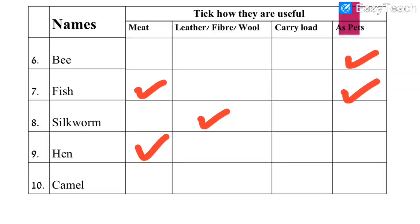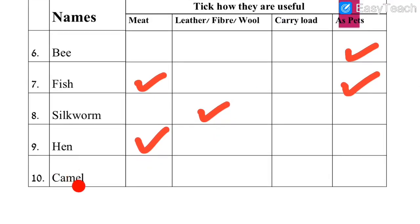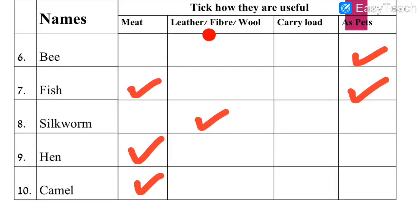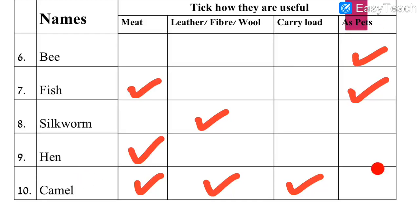Number 10: Camel. Can we get meat from camel? Yes, we can — tick mark. Can we get leather, fiber, or wool from camel? Yes, we can — tick mark. Can camel carry load for us? Yes, camels can carry load for us — tick mark. Can we keep camel as our pet in the home? No, we cannot keep camels as pets in our homes — no tick mark.